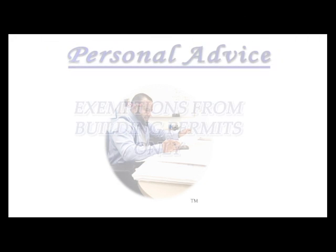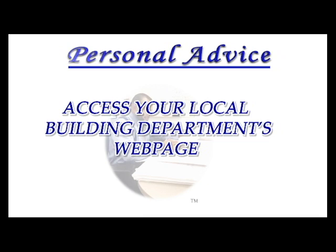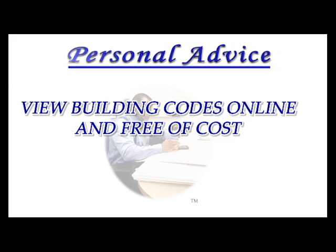I hope you found this information of value. Remember that work discussed on this video are exemptions from building permits only — such work may require clearances from other departments, but start with your local building department, as they are usually the hub of the permitting process. Access your local building department's webpage for help or resources — you can find informational handouts, inspection checklists, online portals to check permit history, schedule inspections, and check the status of submitted projects. Also remember that building codes are available online and free of cost — links to access codes and other helpful resources are in the description box.